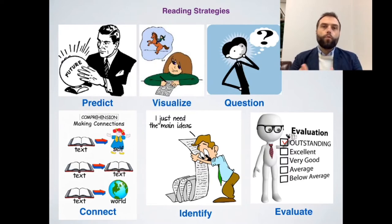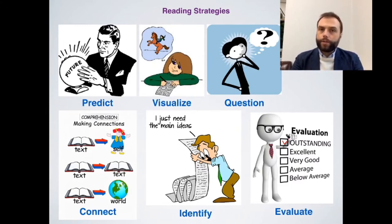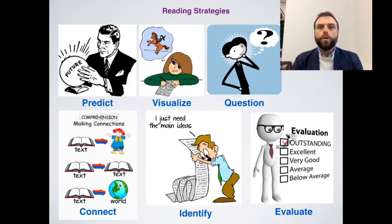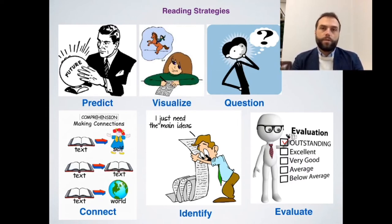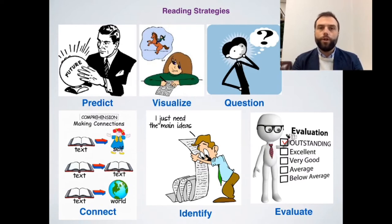The next strategy is connect. There are different ways of connecting: text to self, which is personalizing; text to text; and text to world. There's also a fourth called text to media, which means connecting the text to things we know from media such as television, cartoons, radio, YouTube videos, movies, and characters. These are different ways of connecting content from the text to something else — the learner, another text, or things in the world. You can do this in the pre-stage before listening and reading, or use it as a strategy during reading and listening through worksheets and activities.